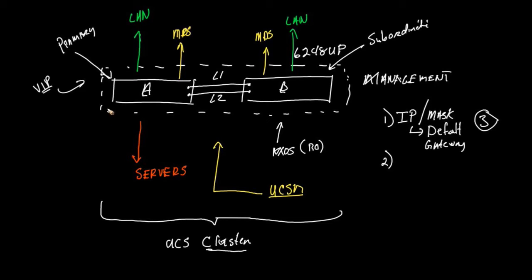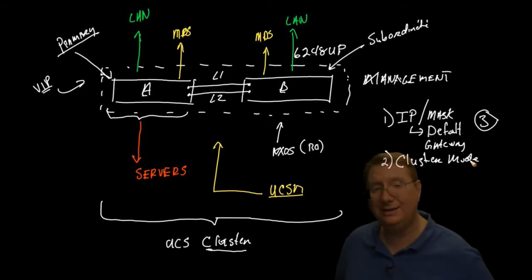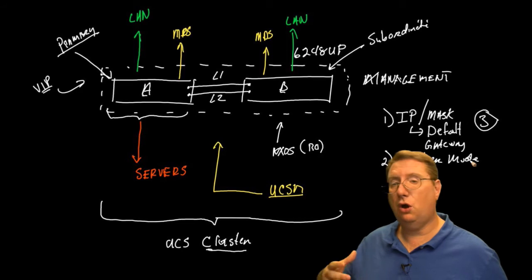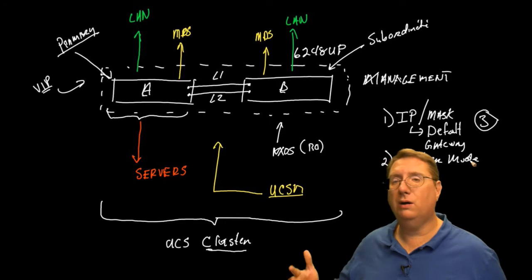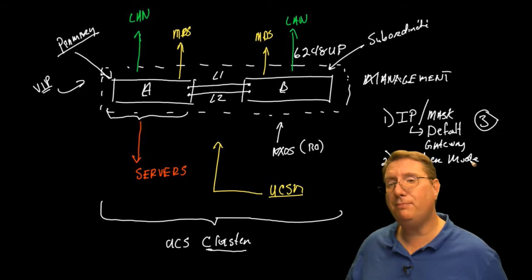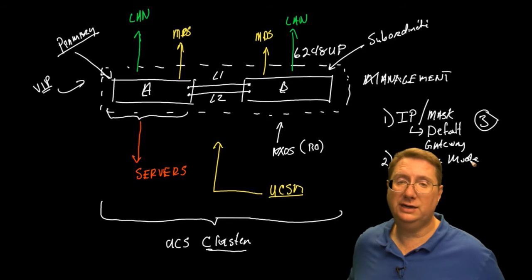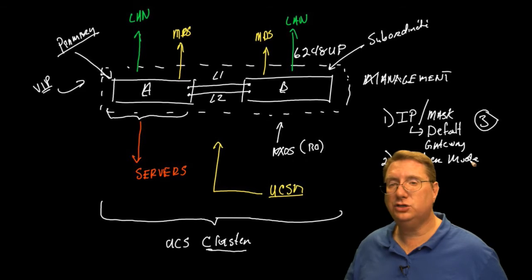I'm going to bring up Fabric Interconnect A first, which is going to make Fabric Interconnect A the primary. The other part of this is I'm going to have to specify what I'm going to call my cluster mode. There are scenarios where I could have only one fabric interconnect — it's not an ideal situation by any stretch but it does exist as an accepted configuration. In order to do the implementation, I'm going to start on A and tell it that it's going to be part of a cluster, so it will know at some point it's going to be communicating to the subordinate fabric interconnect.